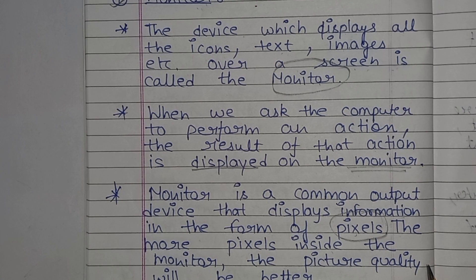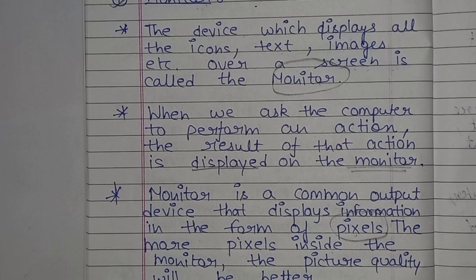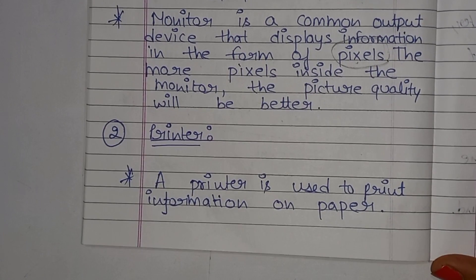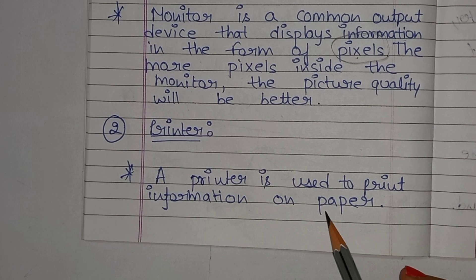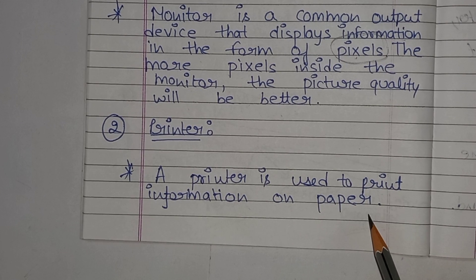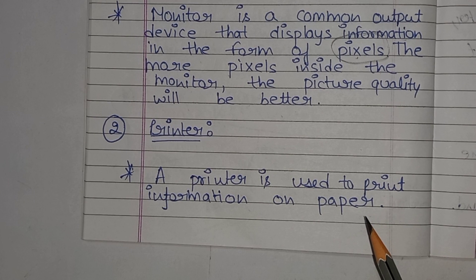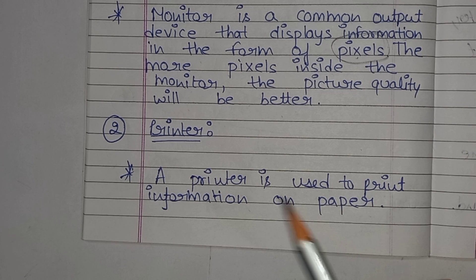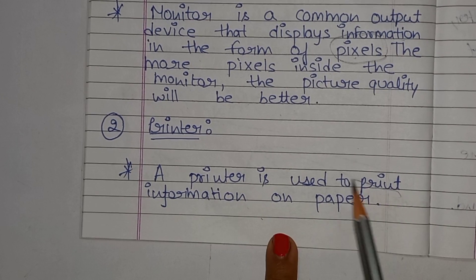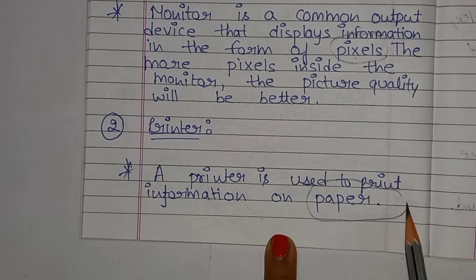Next I will talk about the second output device: the printer. The printer is used to print information on paper.